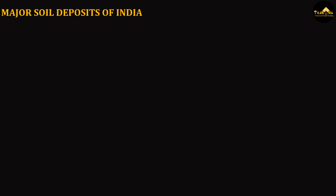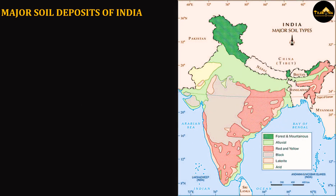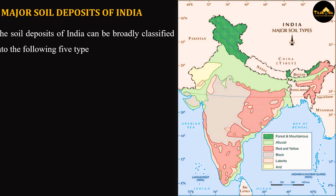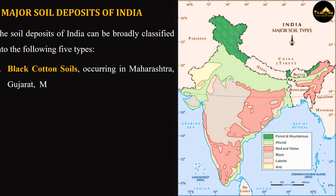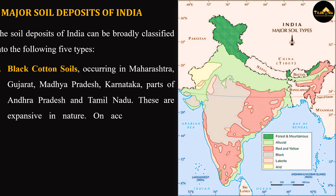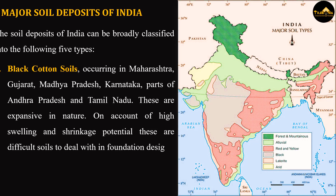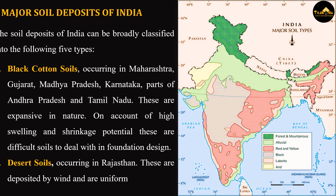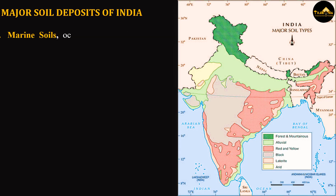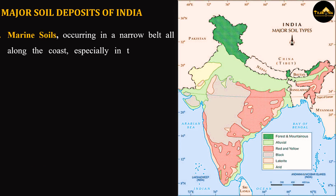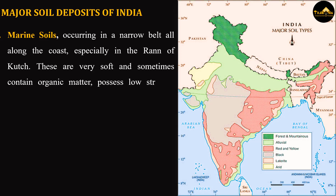Major Soil Deposits of India. The soil deposits of India can be broadly classified into five types. Black cotton soils, occurring in Maharashtra, Gujarat, Madhya Pradesh, Karnataka, parts of Andhra Pradesh and Tamil Nadu — these are expansive in nature, and on account of high swelling and shrinkage potential, are difficult soils to deal with in foundation design. Desert soils, occurring in Rajasthan — these are deposited by wind and are uniformly graded. Marine soils, occurring in a narrow belt all along the coast, especially in the Rann of Kutch — these are very soft, sometimes contain organic matter, and possess low strength and high compressibility.